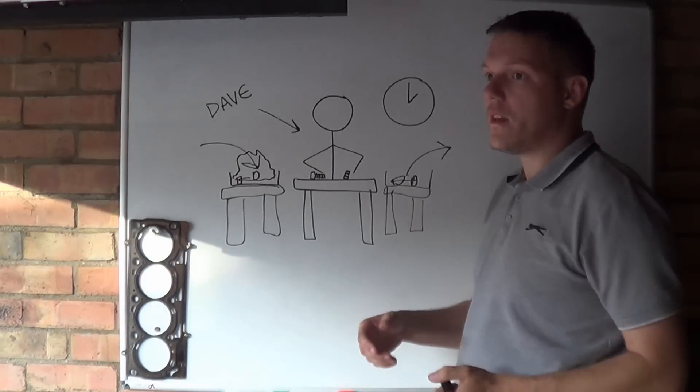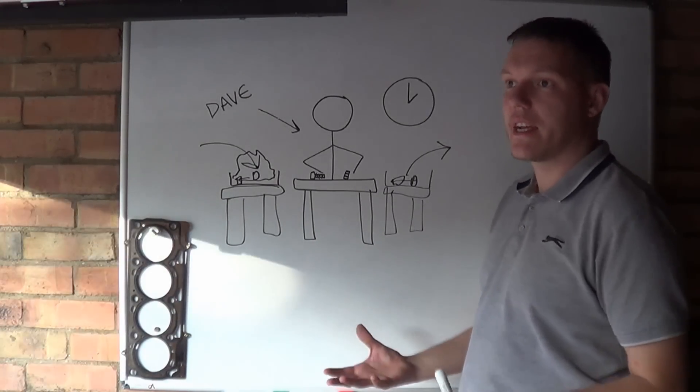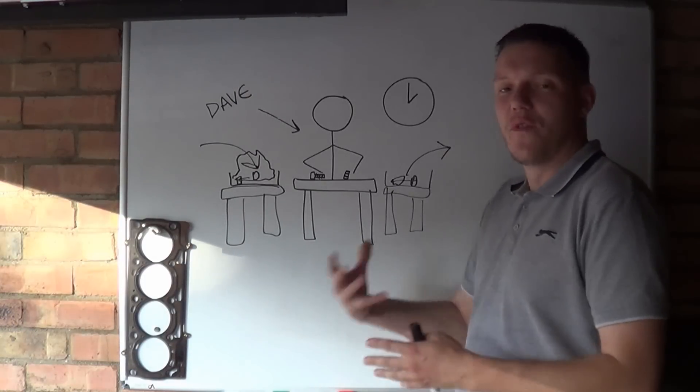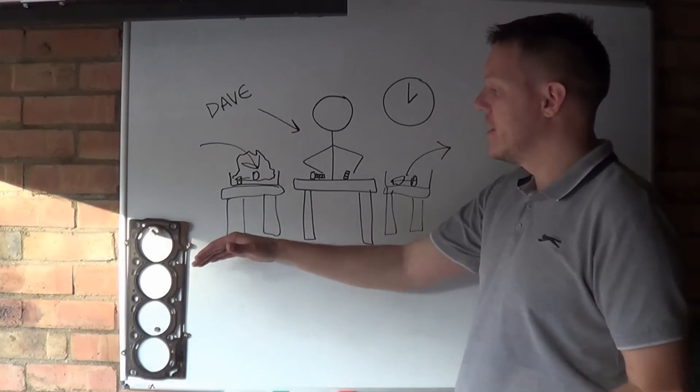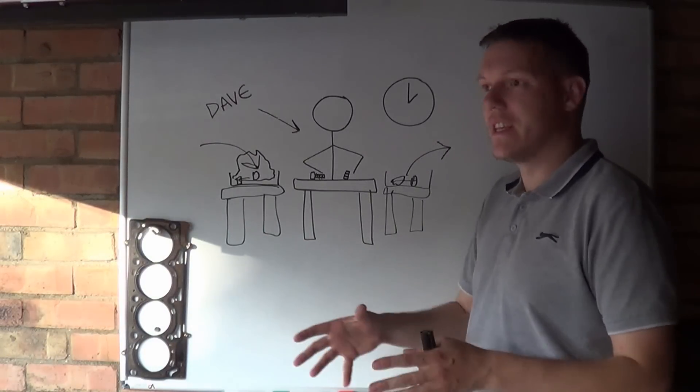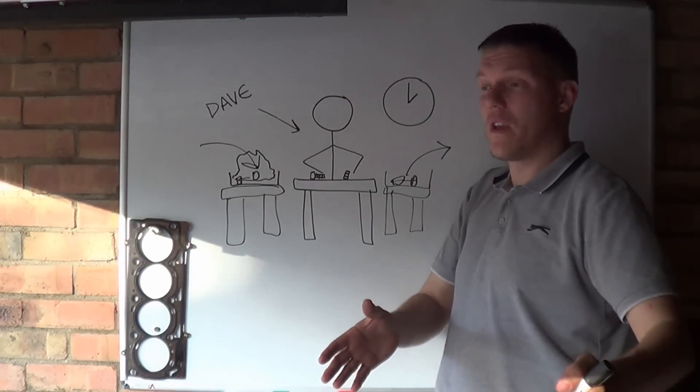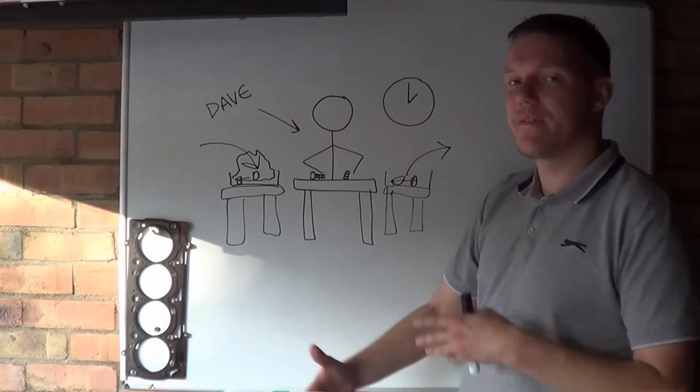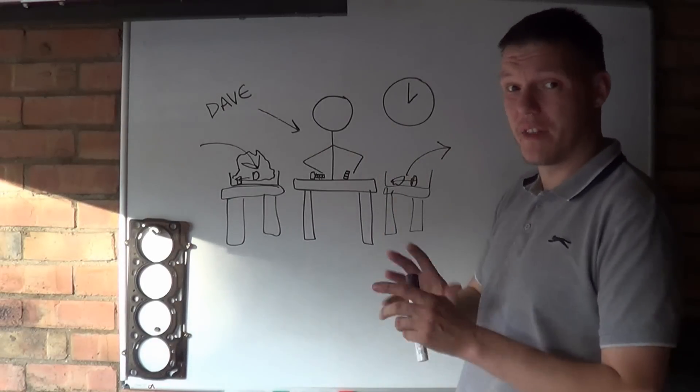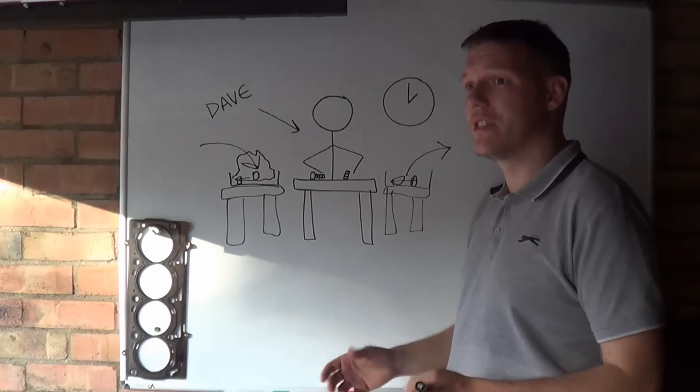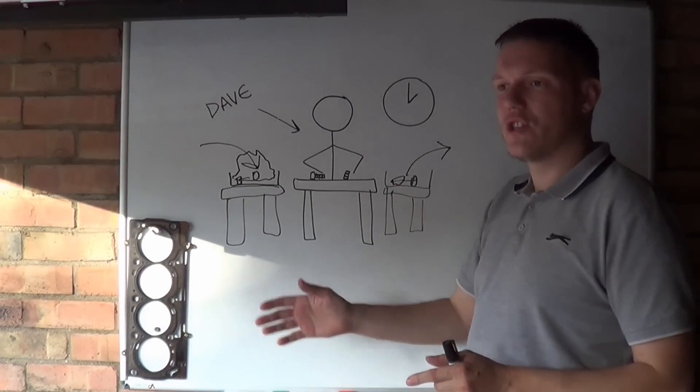Then we get to the point where Dave's doing a bolt every three seconds and this is lovely. There's a nice flow, he's not getting bored or lethargic, his production rate is really good—producing a bolt every three seconds compared to one every 10 seconds. Everything is flowing nicely, bolts going in and out, Dave's content and everything's brilliant. This is the same with an engine—there's a rev range where everything just flows great.